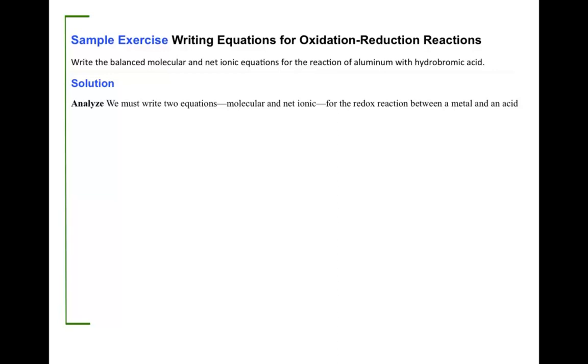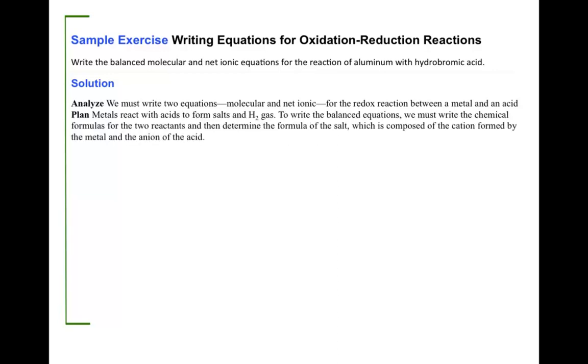Metals react with acids to form salts and hydrogen gas. To write a balanced equation, we must write the chemical formulas for the two reactants and then determine the formula of the salt, which is composed of the cation formed by the metal and the anion of the acid.